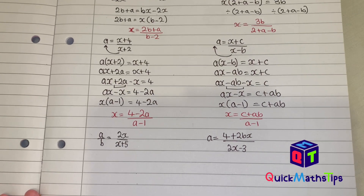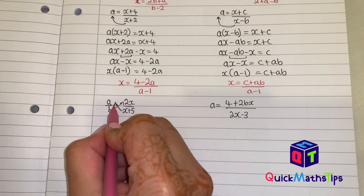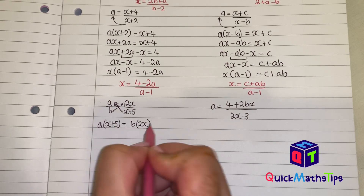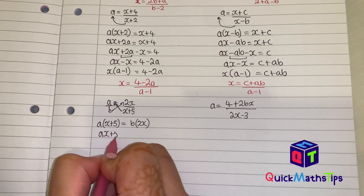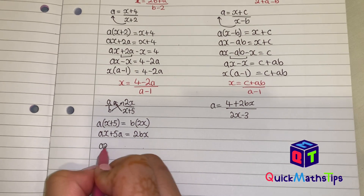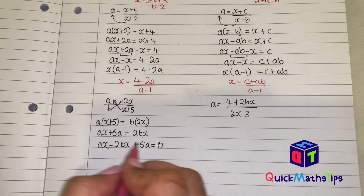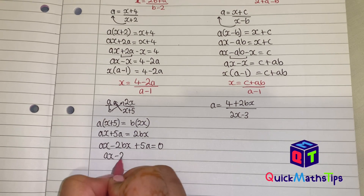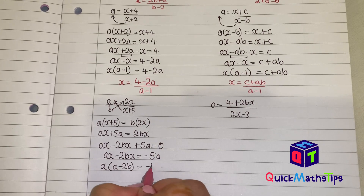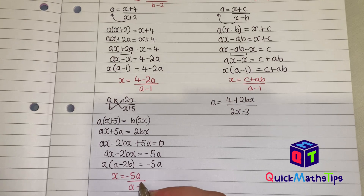When a fraction is equal to a fraction, you cross-multiply, multiplying each denominator by the opposite numerator. So you are left with a bracket x plus 5 equals b bracket 2x. Expand both sides to get ax plus 5a equals 2bx. Subtract 2bx on both sides to get ax minus 2bx plus 5a equals 0. Take away 5a on both sides: ax minus 2bx equals negative 5a. Factorize by x: x bracket a minus 2b equals negative 5a. Divide by a minus 2b: x equals negative 5a divided by a minus 2b.